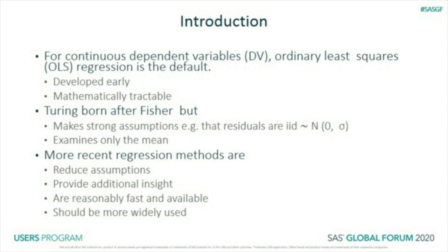I don't think any of you would only examine the mean when looking at a continuous variable. You'd at least look at the standard deviation, the range, the interquartile range, a frequency distribution, or a density plot. More recent methods reduce the assumptions, provide additional insight, are nowadays reasonably fast and available, and I think they should be more widely used.